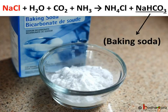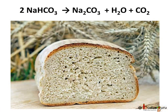Now, we can also get baking soda from common salt. Baking soda is sodium hydrogen carbonate, i.e. NaHCO₃. Baking soda is used for baking, and sometimes it is also added for faster cooking. When heat is applied, sodium hydrogen carbonate decomposes and produces carbon dioxide, which makes bread, cakes, etc. swell and makes them soft and spongy.